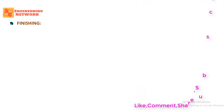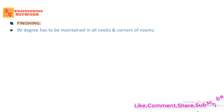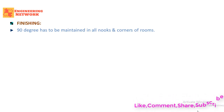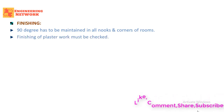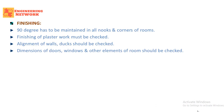Finishing is also very important in building construction. Finishing refers to plastering of buildings or floors. A civil site engineer must ensure that 90-degree angles are maintained in all nooks and corners of a room during plastering. The quality of plaster finish must be checked, and alignment of walls and ducts should be verified. Dimensions of windows, doors, and other room elements should also be checked.